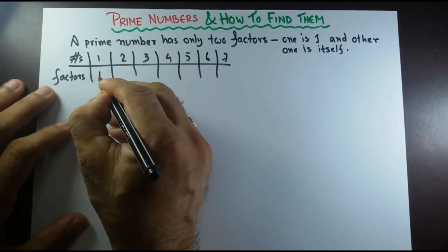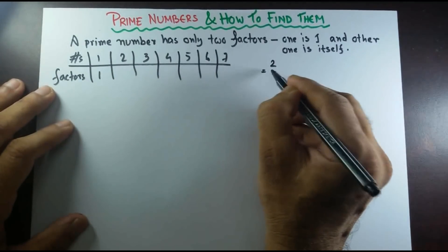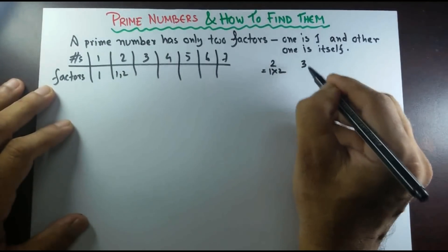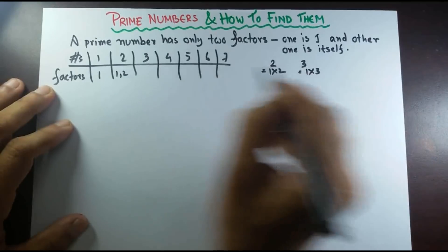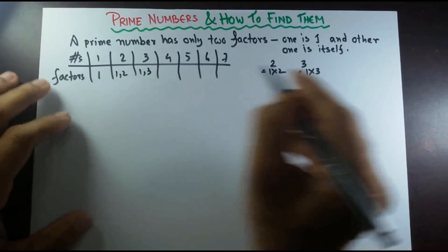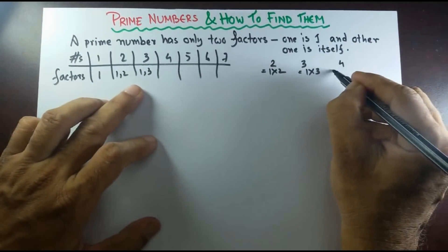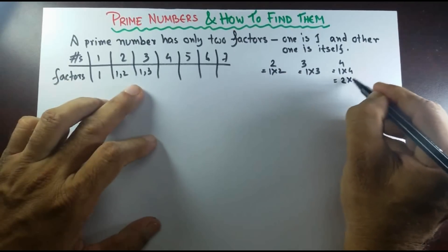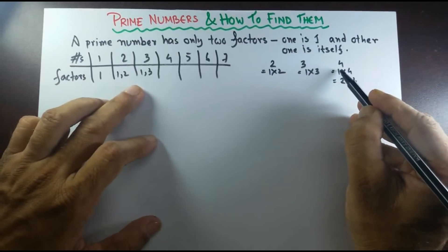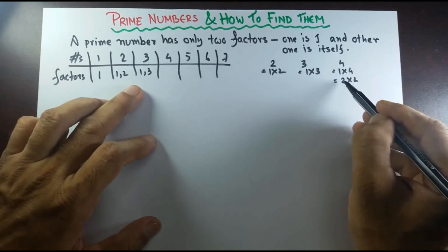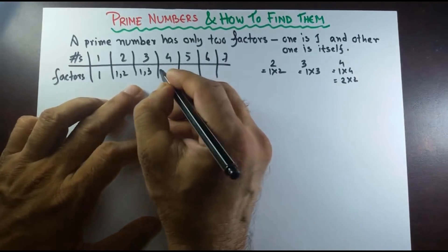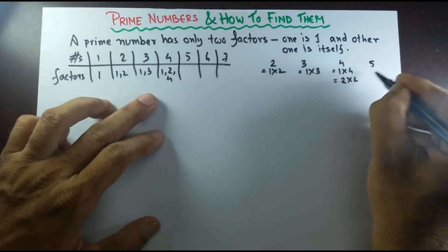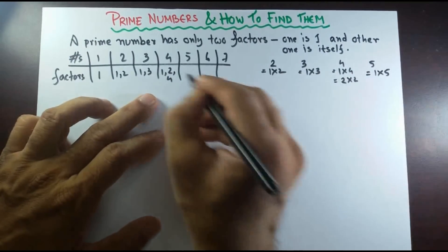One has only one factor. 2 can always be written as 1 times 2, so there are two factors. 3 can be written as 1 times 3 — so 1 and 3, two factors. 4 can be written as 1 times 4 and 2 times 2 — there are more than two factors: 1, 2, and 4. 5 can be written as 1 times 5, so two factors.